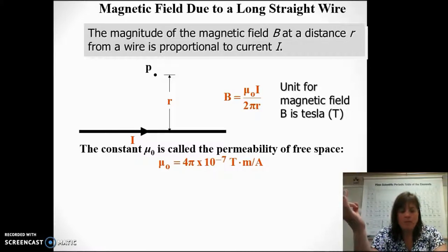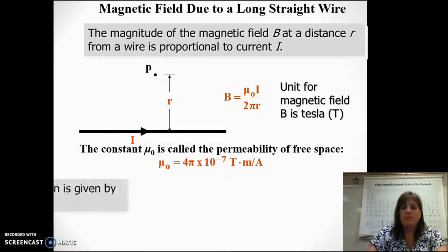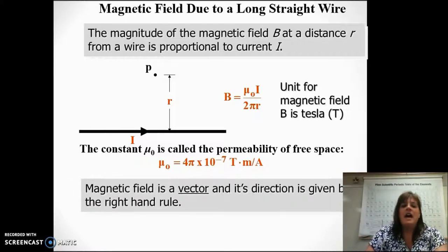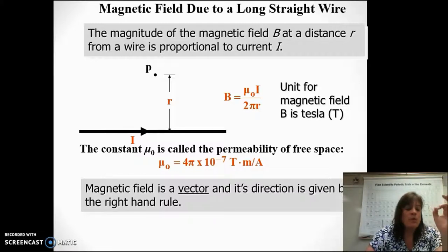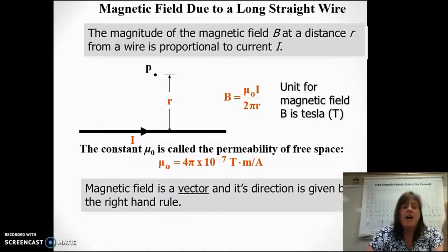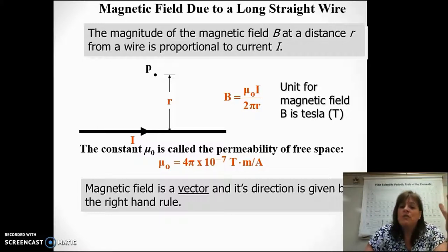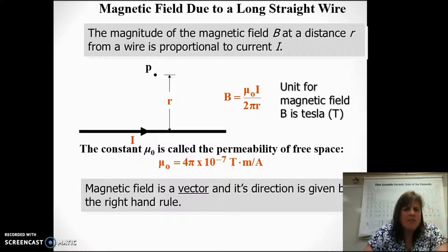The unit ends up being Tesla. Now, magnetic fields, just like electric fields, are vectors and we need directions. Remember, for electric fields the direction was given by the way a positive charge would move in the field. But what do we do for magnetic fields? Because magnetic fields are continuous loops.